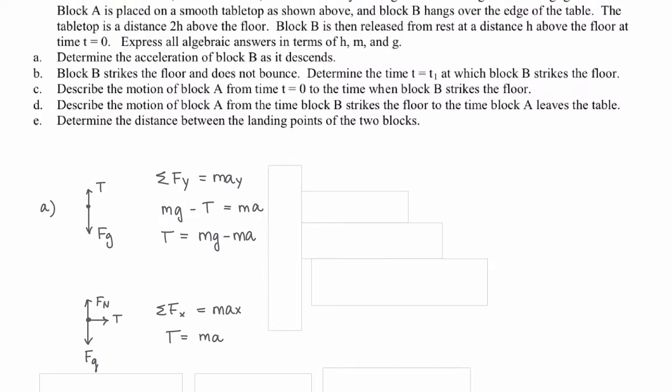Setting these two tensions equal: mg minus ma equals ma. Solving for acceleration, we move the a terms to the same side, the m's cancel, and we get acceleration equals half g.